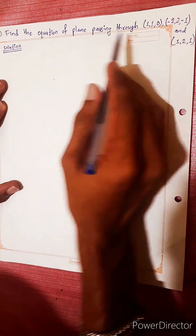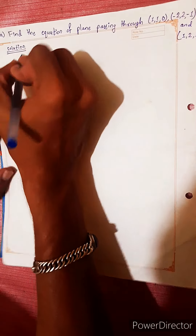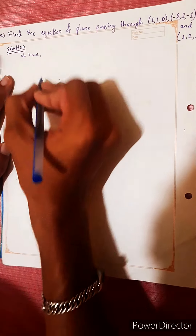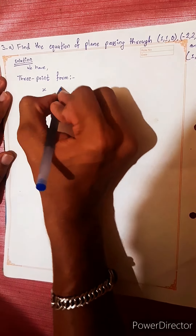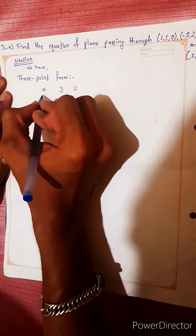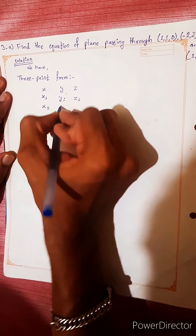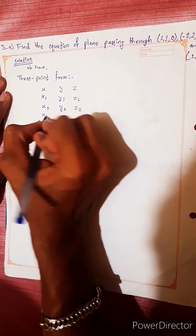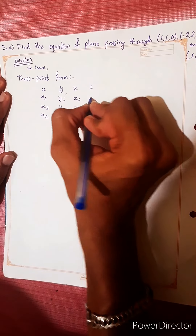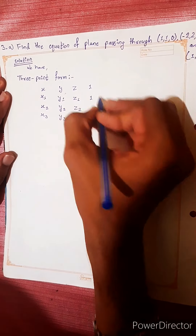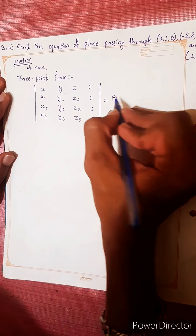Find the equation of a plane passing through 3 points. We use the 3-point form. The general variables are X, Y, Z for the first row; X1, Y1, Z1 for the first point; X2, Y2, Z2 for the second point; and X3, Y3, Z3 for the third point. We place 1s in the first column. The determinant equals zero — this formula will solve it.